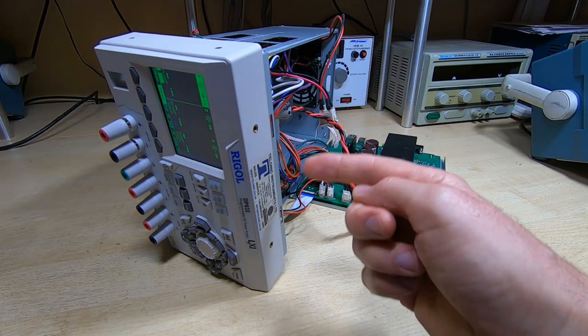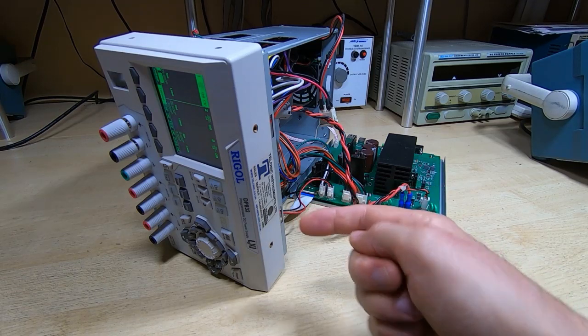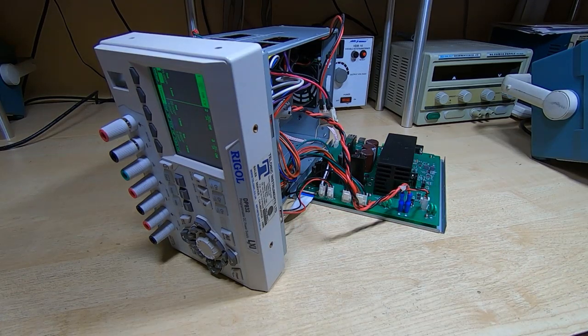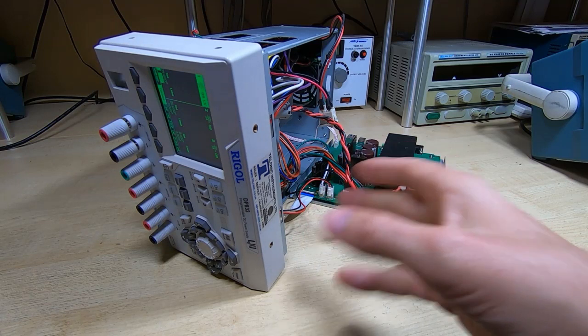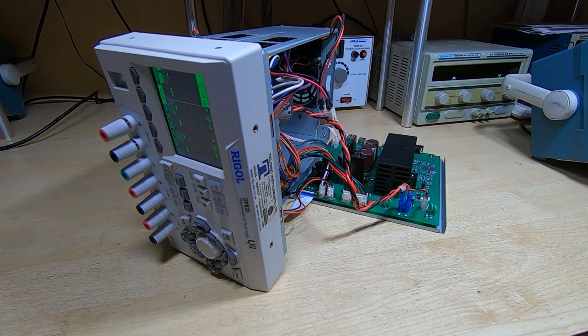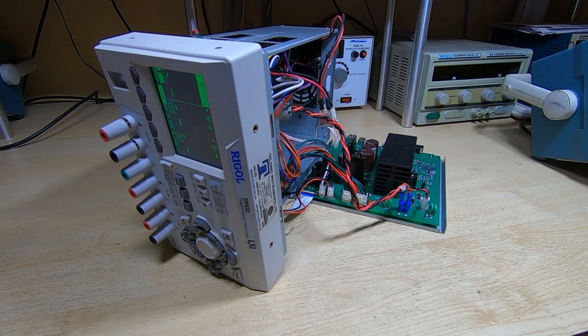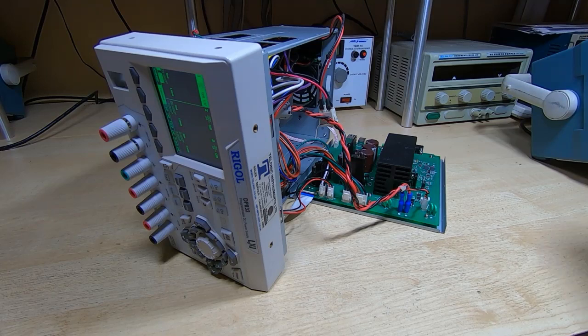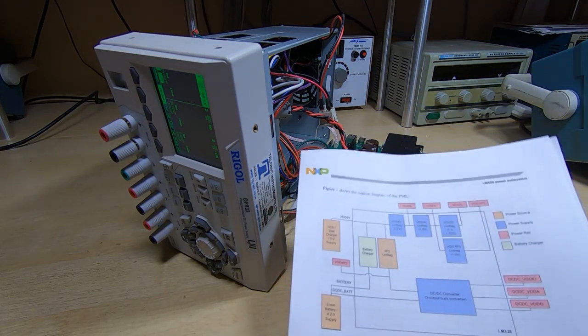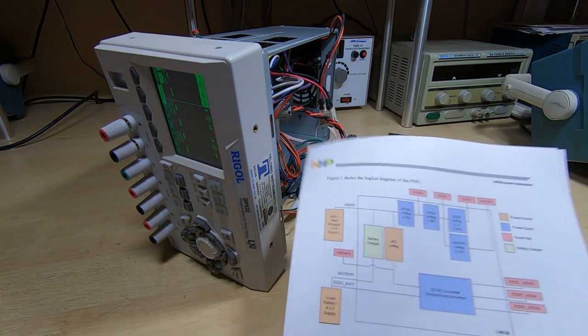I think it's poor design on the part of Rigol. They haven't properly tested this, they haven't gone through and properly understood the spec sheet for the processor that they're using. So just to recap on something I showed in the previous video, this is the flow chart, the block diagram of the power handling part of the processor.